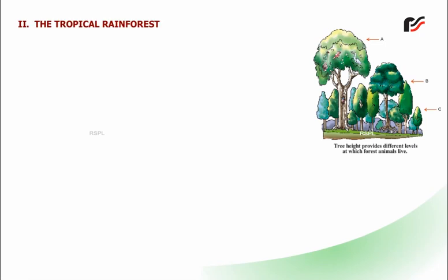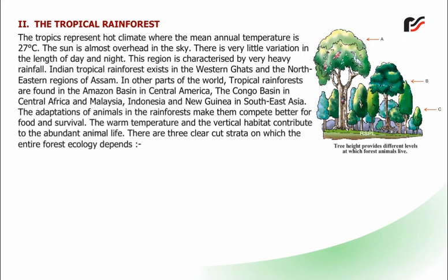The tropical rainforest: the tropics represent a hot climate where the mean annual temperature is 27°C. The sun is almost overhead in the sky, and there is very little variation in the length of day and night. This region is characterized by very heavy rainfall. Indian tropical rainforests exist in the Western Ghats and the northeastern regions of Assam. In other parts of the world, tropical rainforests are found in the Amazon basin in Central America, the Congo basin in Central Africa, and in Malaysia, Indonesia, and New Guinea in Southeast Asia. The adaptation of animals in the rainforest helps them compete better for food and survival, and there are three clear-cut strata on which the entire forest ecology depends.